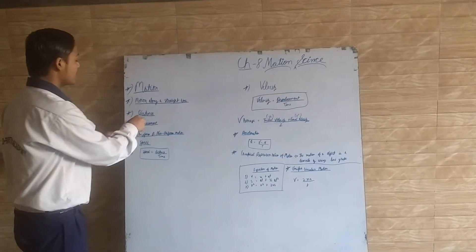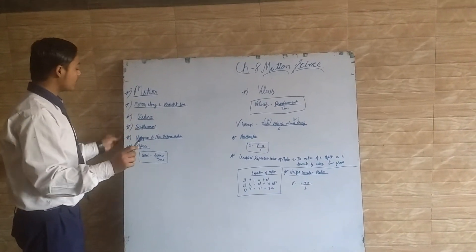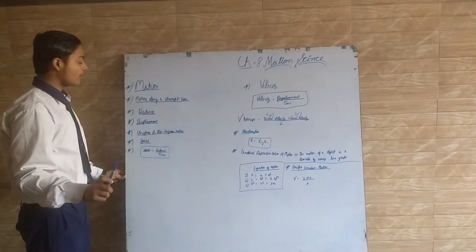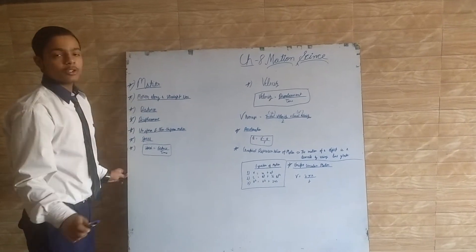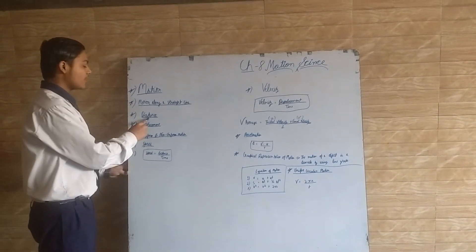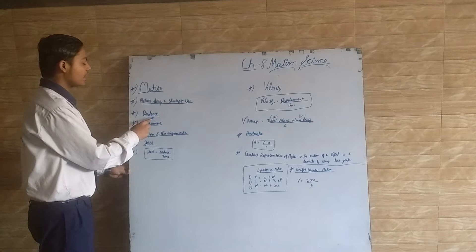Distance: the object will cover the total path traveled with respect to time. Its SI unit is meter, and distance is always positive, never zero.